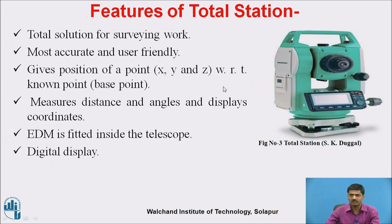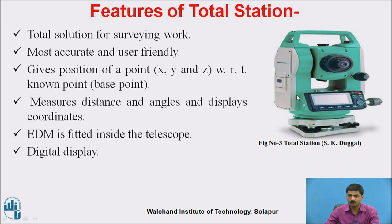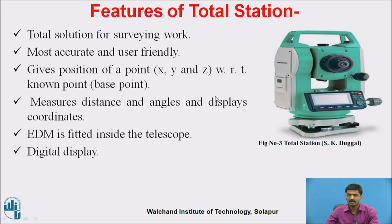Features of Total Station — why we are using this particular instrument and what features are present. First, Total Station is used for different surveying work. It is the most accurate and user-friendly equipment. Easily you can identify the input-output data and record the data. It gives the position of a point in all directions — that is X, Y, and Z direction — your base points. It measures angles and distances, and it displays the coordinates X, Y, and Z.